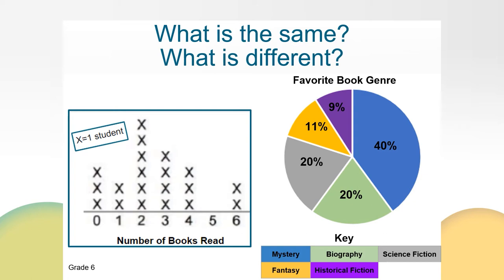Now let's talk about what is different. These are two different graphs — a line plot and a circle graph. Line plots show each individual data point, and in this case each X represents one student in Ms. Hogan's class. Circle graphs show the percentage of the whole — I can see the relationship between each category and the whole, but I cannot see individual data points or the total number of data points. These graphs are both about books but the topics are different. The line plot asks a numerical question: how many books were read? Whereas the circle graph asks a categorical question: what is your favorite genre of book to read?